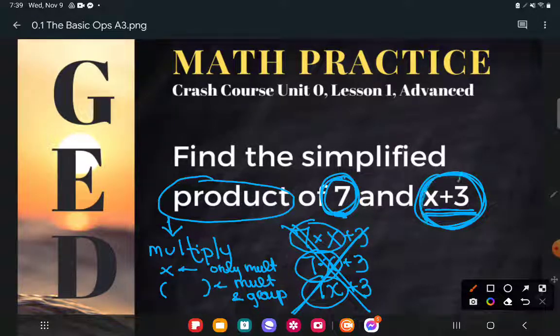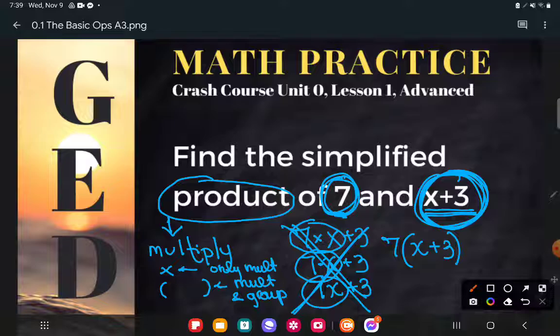This says multiply seven by all this junk. And that is why we need parentheses here. We want to take seven and multiply by all this junk. Group that x plus three together. So seven multiplies by the entire expression.